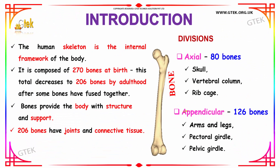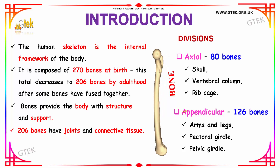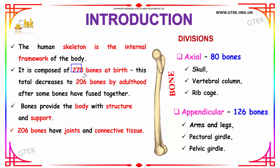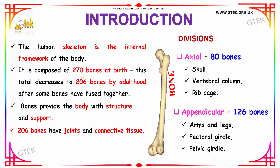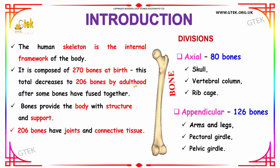The Human Skeleton is the internal framework of the body which gives shape to a human body. It is composed of 270 bones at birth — an infant just born will have 270 bones — and this total decreases to 206 bones by adulthood.